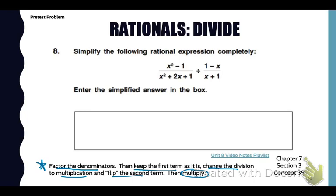Look at number 8 in your pretest. We're going to divide and then simplify. Before we divide, first we're going to factor. The numerator of the expression on the left will factor as (x + 1)(x - 1). The denominator will factor as (x + 1) squared.